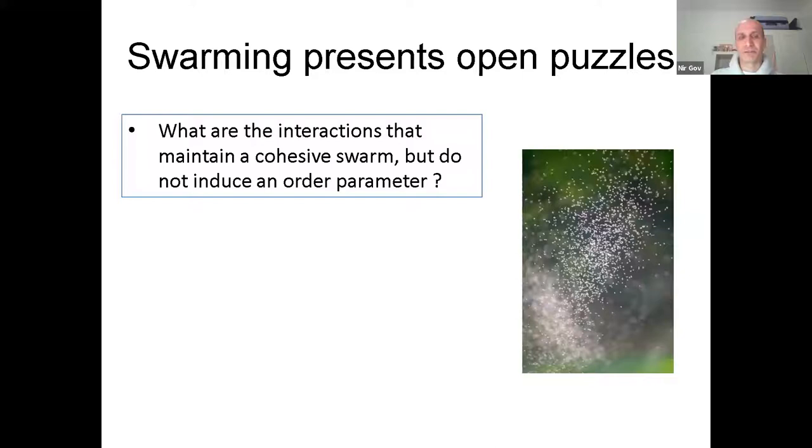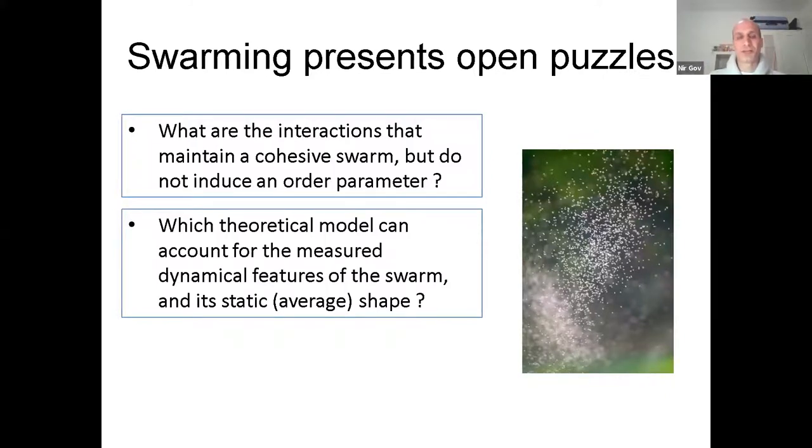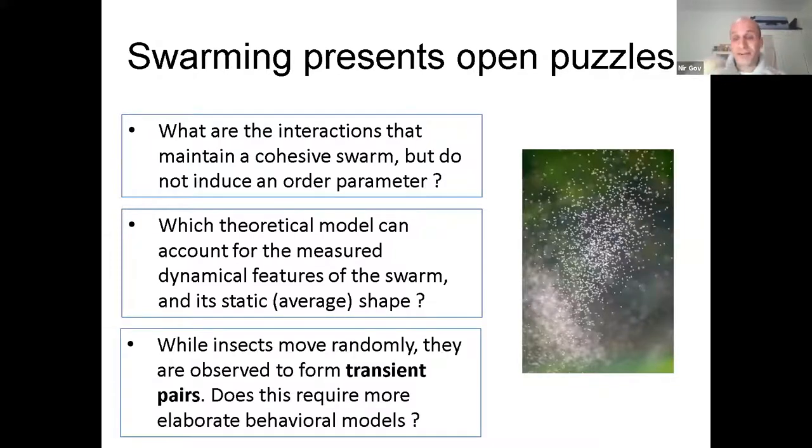Now in the swarm, there's no obvious order parameter because they are going all over the place. So you can ask what actually keeps them cohesive and what theoretical model should we actually think of in order to describe this thing. And finally, I hope I will get to it at the end of the talk, is that about five years ago, it was observed that within this mass, within this chaos, there are transient pairs of two midges that actually come together and sort of form an orbiting pair for a significant amount of time. And again, do we need elaborate behavioral models to go into the brain of these animals and consider what could be the evolutionary advantage of coming and forming these pairs? Maybe to check on each other, maybe to see if they don't miss a female, or can we still explain even that puzzling behavior within the same physics type modeling?